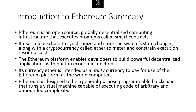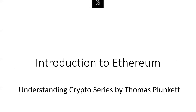This introductory lecture talked about Ethereum at a very high level. We talked about the fact that Ethereum is an open source, globally decentralized computing infrastructure that executes programs called smart contracts. Ethereum uses a blockchain to synchronize and store the system state changes, along with a cryptocurrency called ETH to meter and constrain execution resource costs. We talked about how the Ethereum platform enables developers to build powerful decentralized applications with built-in economic functions. And we talked about the fact that Ethereum's currency, Ether, is intended as a utility currency to pay for use of the Ethereum platform as a world computer, as opposed to a currency on its own as Bitcoin was intended to be. Finally, Ethereum is designed to be a general purpose programmable blockchain that runs a virtual machine capable of executing code of arbitrary and unbounded complexity. Thanks for watching this introduction to Ethereum lecture, part of the Understanding Crypto series by Thomas Plunkett. We will have subsequent lectures on Ethereum in the next few weeks.